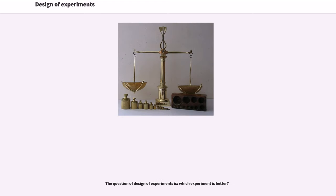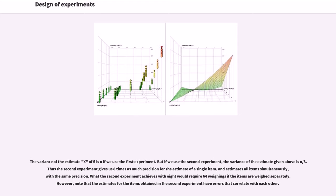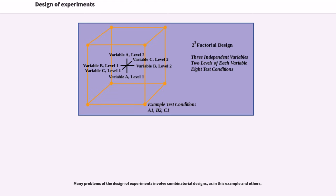The question of design of experiments is, which experiment is better? The variance of the estimate X of the theta is sigma squared if we use the first experiment. But if we use the second experiment, the variance of the estimate given above is sigma squared divided by 8. Thus the second experiment gives us 8 times as much precision for the estimate of a single item, and estimates all items simultaneously with the same precision. What the second experiment achieves with 8 weighings would require 64 weighings if the items are weighed separately. Note that the estimates for the items obtained in the second experiment have errors that correlate with each other. Many problems of the design of experiments involve combinatorial designs, as in this example and others.